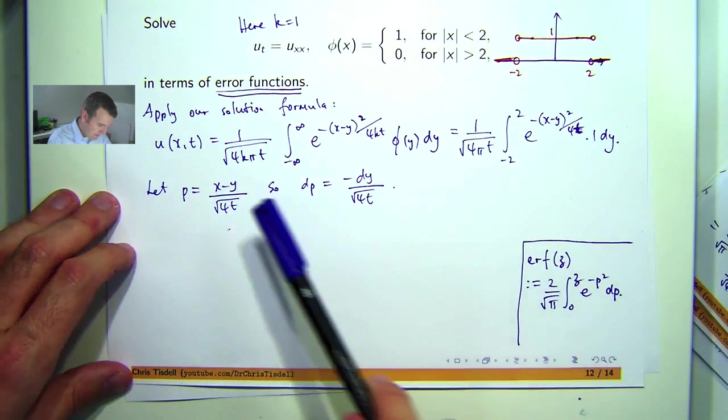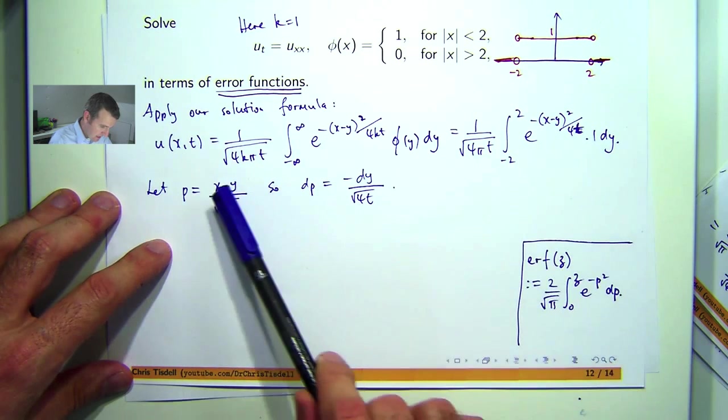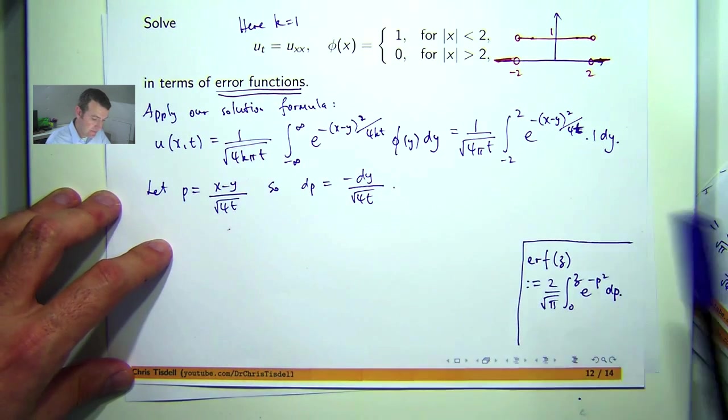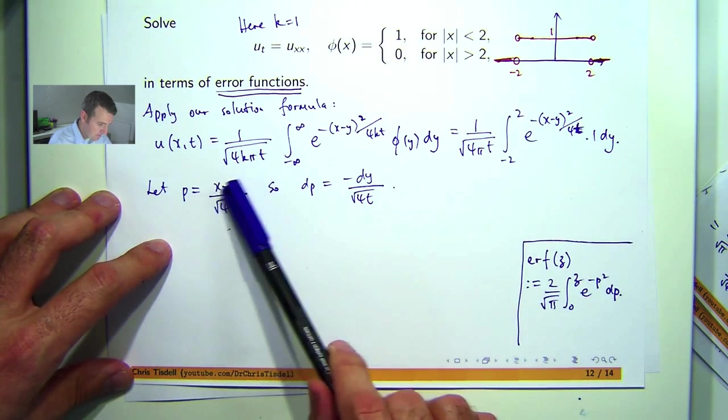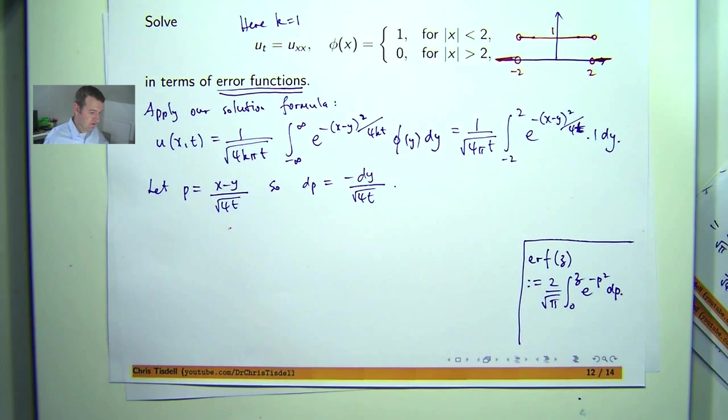Now when y equals negative 2, I'll get x plus 2 up there. So that'll be my lower limit of integration. And when y equals positive 2, I'll get x minus 2 up there. So x minus 2 over this would be the upper limit of integration.